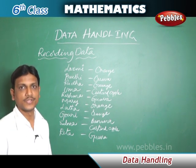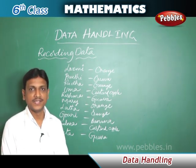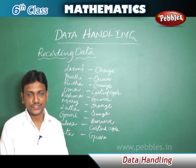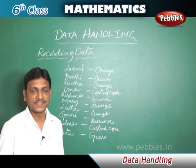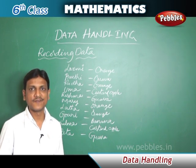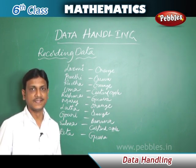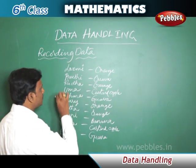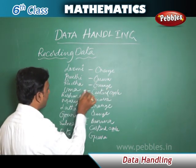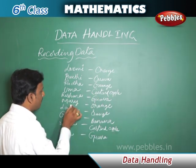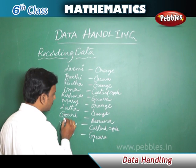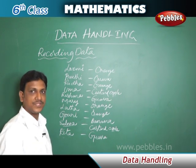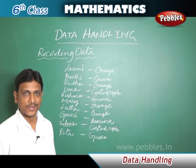Now we will see an example to understand how to record data. Lakshmi is getting ready for her picnic and wanted to gift her friends their favorite fruits. Lakshmi's mother asked her to find out what fruits her friends like. Lakshmi collected the information and prepared a list: Lakshmi – orange, Pretty – guava, Raza – orange, Tuma – custard apple, Reshma – guava, Mary – orange, Lata – orange, Gauri – banana, Salma – custard apple, Rita – guava.